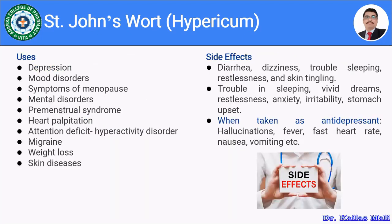Let us move towards the uses or health benefits of Hypericum. It is widely used for depression, mood disorders, symptoms of menopause, mental disorders, premenstrual syndrome, heart palpitations, attention deficit hyperactivity disorder, migraine, weight loss, and skin diseases. It is mainly used for depression, mood disorders, mental disorders, and symptoms of menopause.